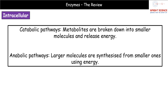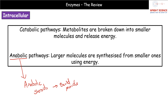There are two types of pathway: catabolic and anabolic. In a catabolic pathway, metabolites are broken down into smaller molecules and energy is released. In an anabolic pathway, larger molecules are built from smaller ones and energy is used. A memory aid: you may have heard of anabolic steroids, which help build muscle. Similarly, anabolic pathways build larger molecules — that link can help you remember.